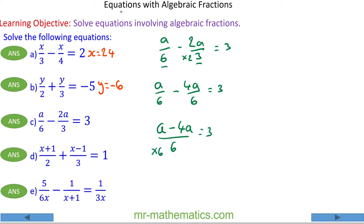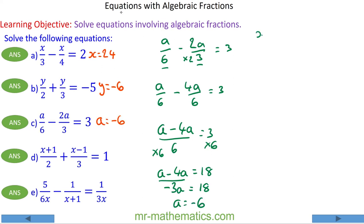And I can multiply both sides by 6 so a minus 4a will equal 18. Minus 3a by collecting these two terms together all equal to 18, so a will equal minus 6.